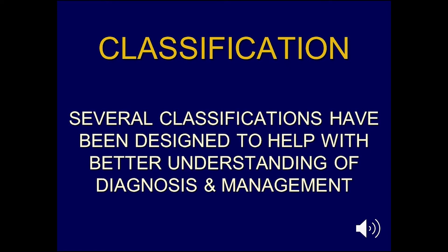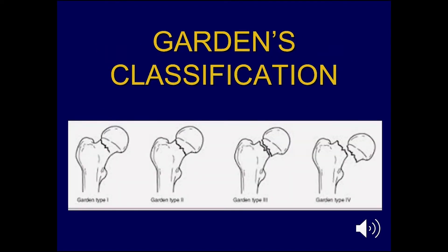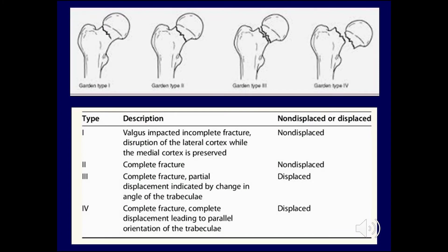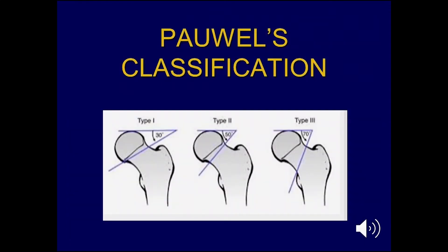To classify these fractures, several classifications have been designed to help with better understanding of diagnosis and management. We start with the Garden classification, which is probably the most popular and useful classification for the neck of femur. It ranges from type 1 — an undisplaced, valgus-impacted incomplete fracture where the lateral cortex is disrupted but the medial cortex is preserved — to type 2, a complete but non-displaced fracture. Garden type 3 is a complete fracture with partial displacement indicated by a change in the angle of the trabeculae, and type 4 is a complete fracture with complete displacement leading to parallel orientation of the trabeculae.